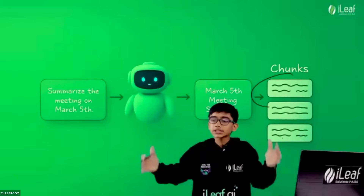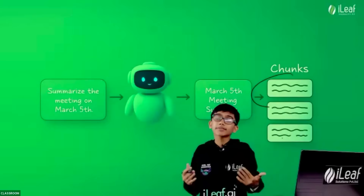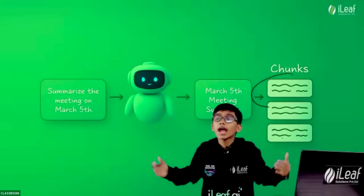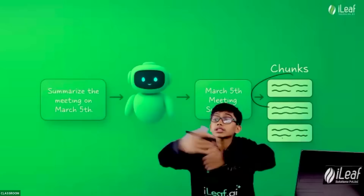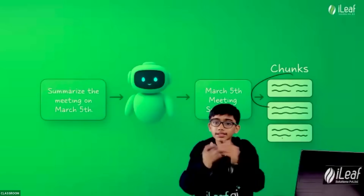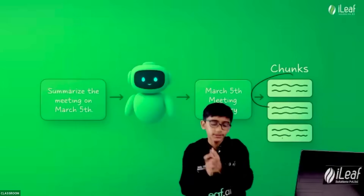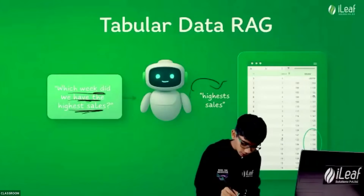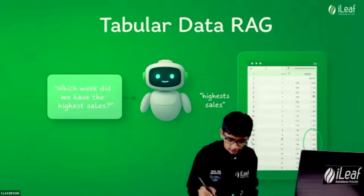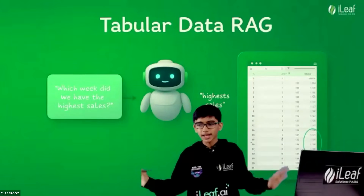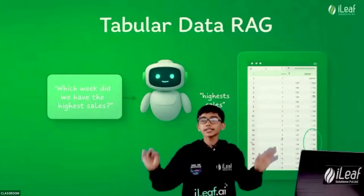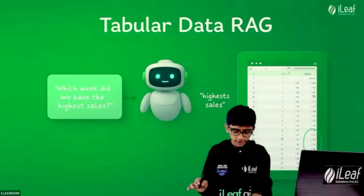In short, agentic RAG fixes that. It goes online, searches when it doesn't have information, and looks at the whole full picture rather than small parts. I didn't want to complicate things, but I think you guys understood.